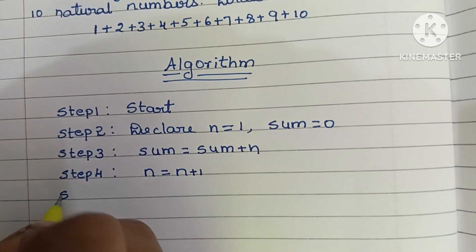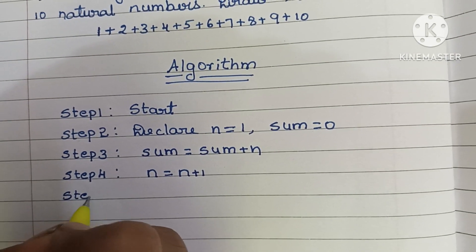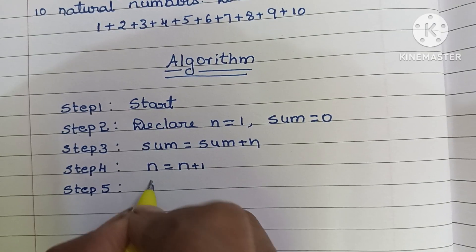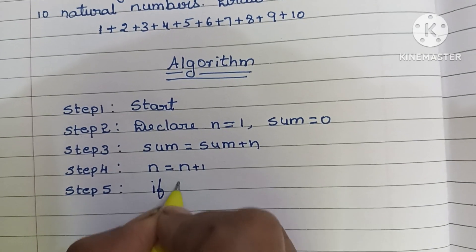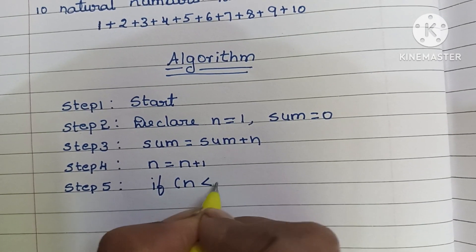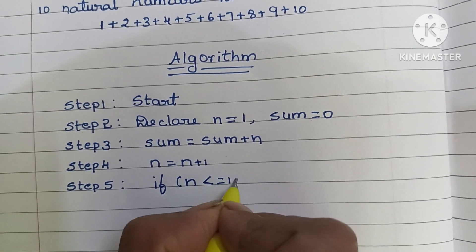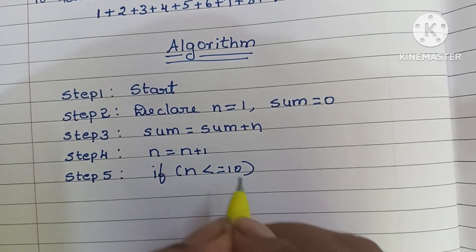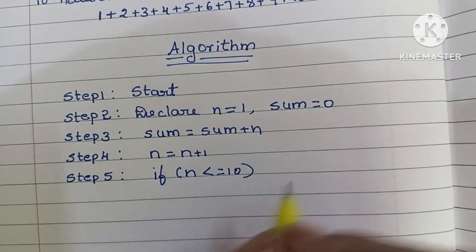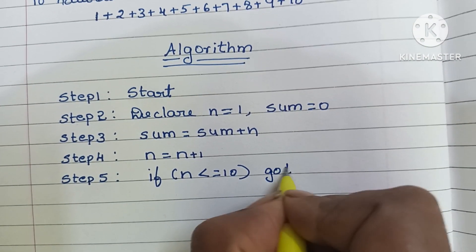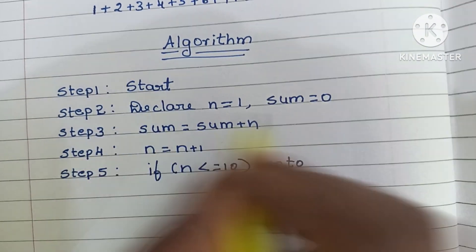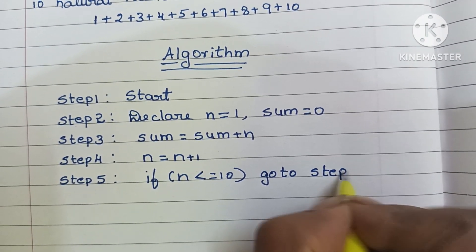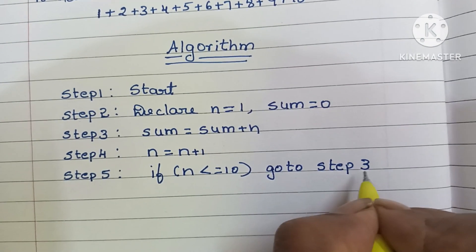Step 5: We have to compare — if n value is less than or equal to 10, then we have to repeat step 3. So if n is less than or equal to 10, go to step number 3.